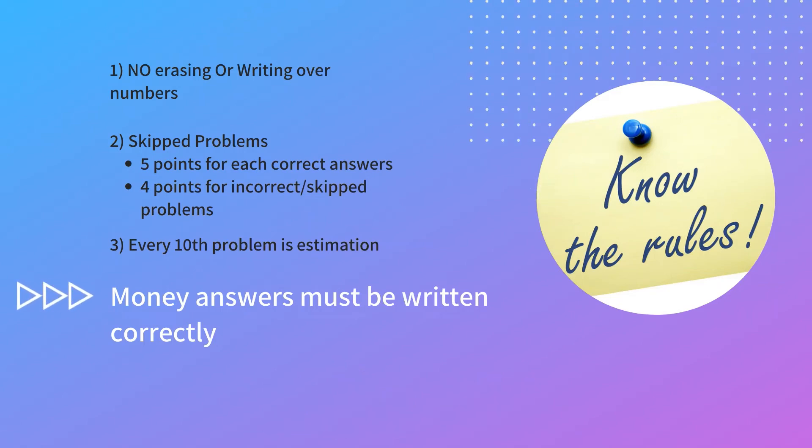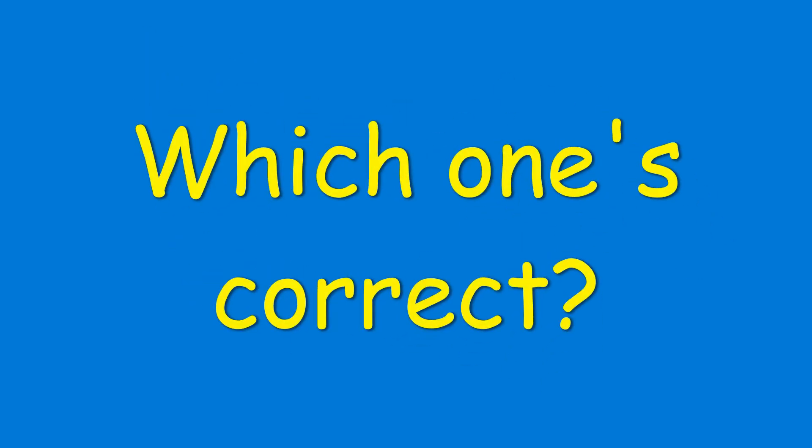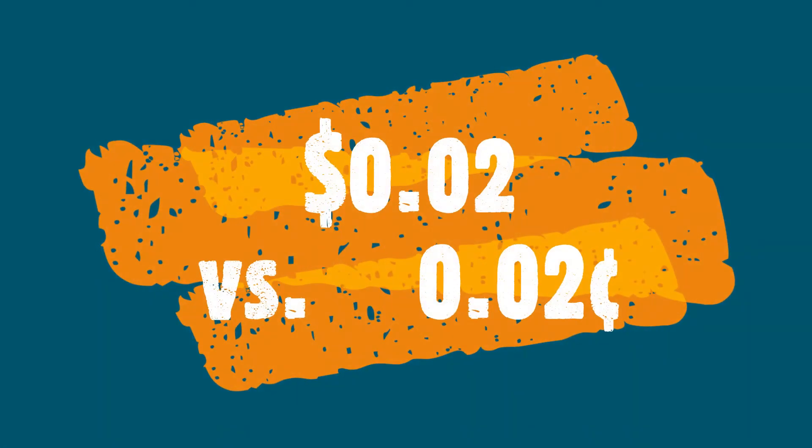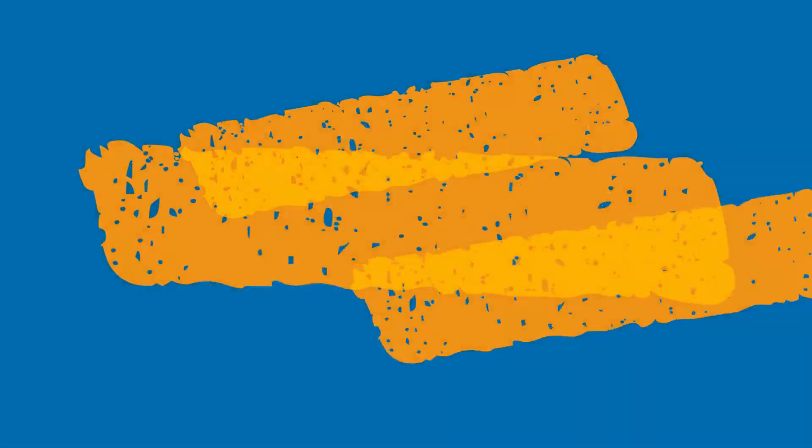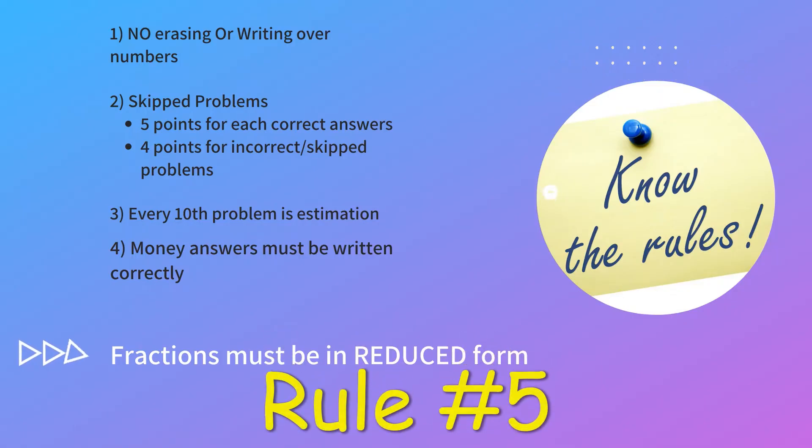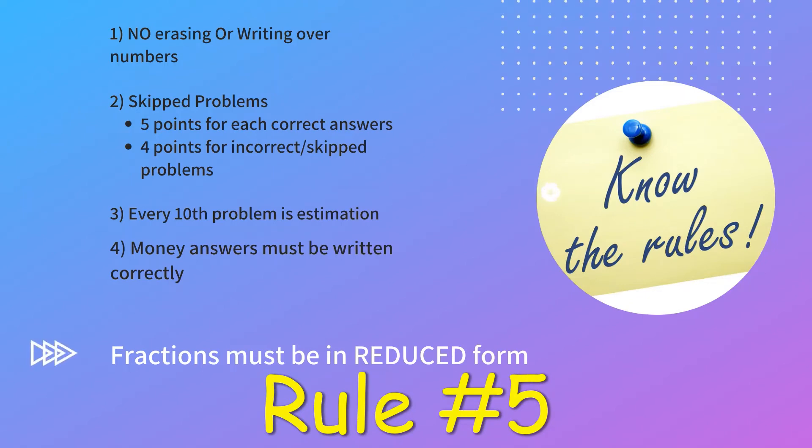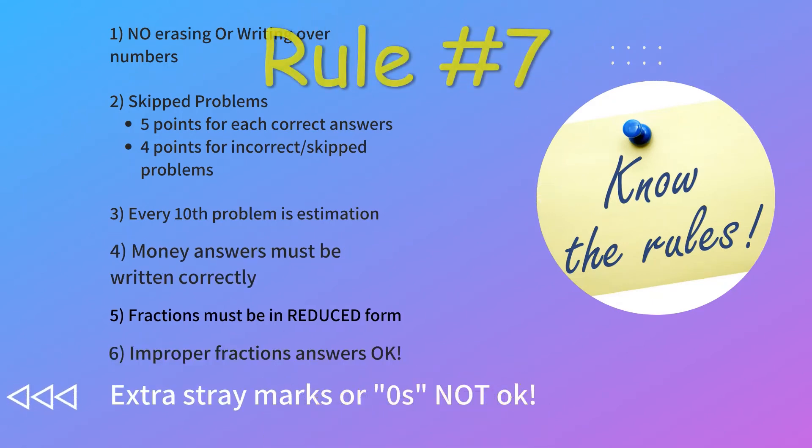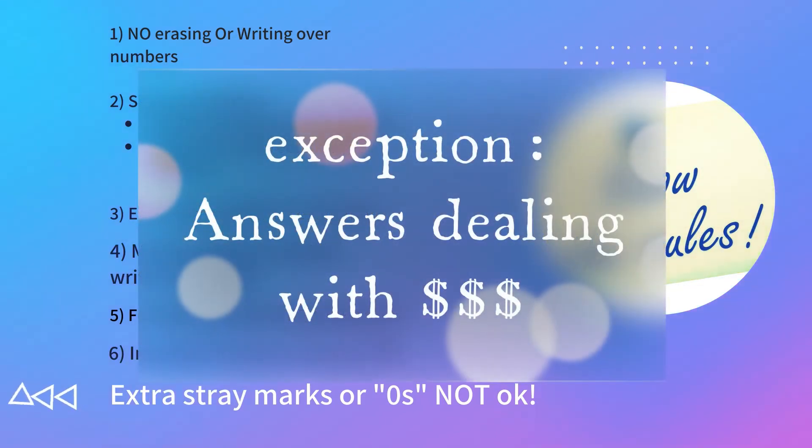Rule number four, money answers must be written correctly. Rule number five, fractions must be in reduced form. Improper fractions are okay. And there are no extra stray marks or extra zeros.